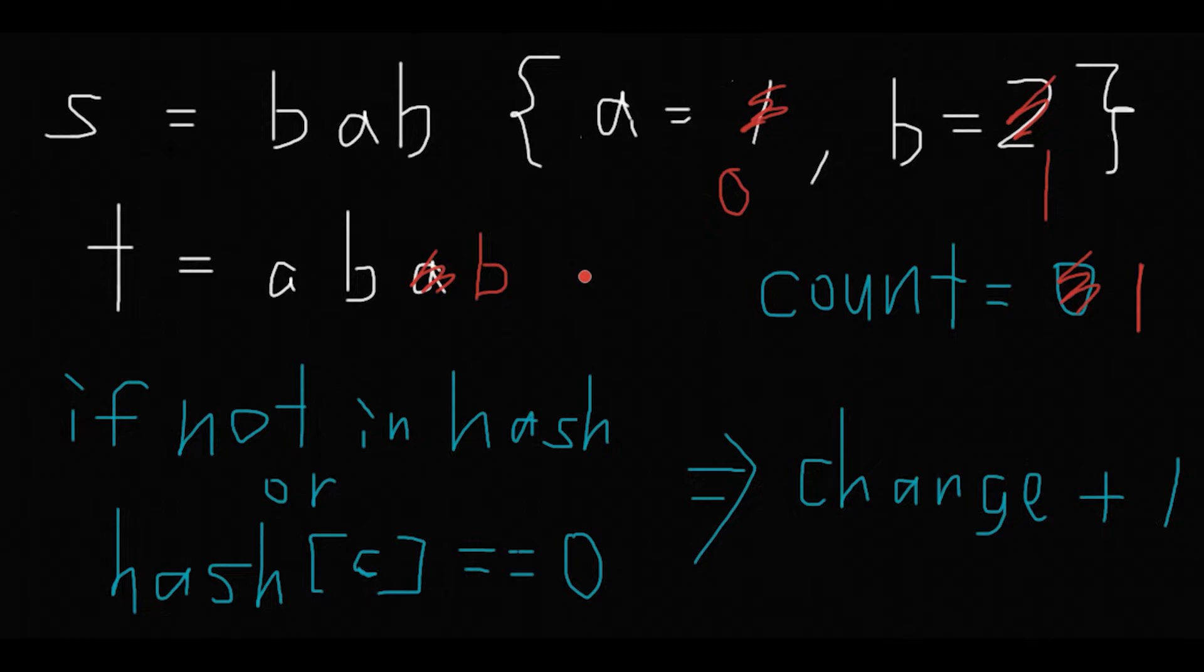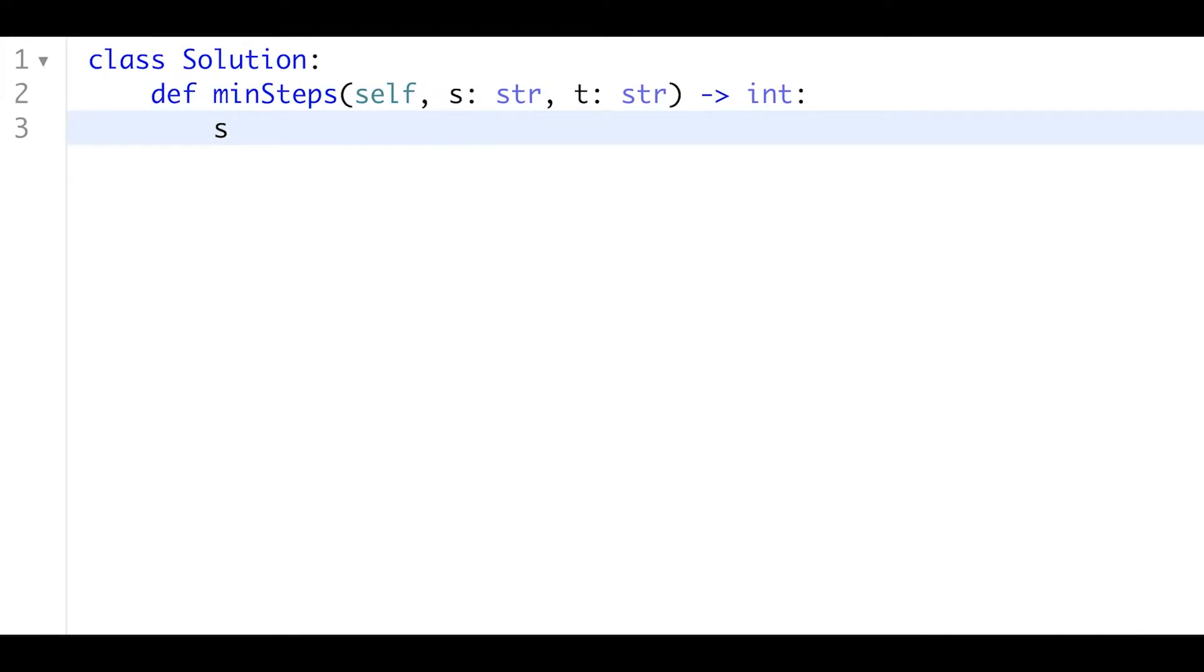With that being said, let's jump into the code. Okay, let's begin. First of all, I initialize a hash table with empty, and next I count each character of string s.